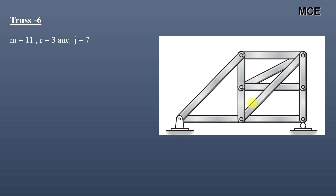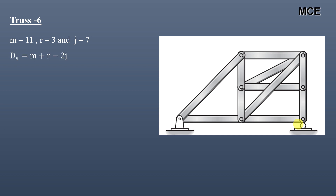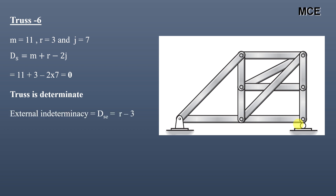For truss six, this truss has 11 members, 3 reactions (two at the hinge and one at the roller), and 7 joints. The value of ds = 0, so the truss is determinate. External indeterminacy is 0 and internal indeterminacy is also 0.